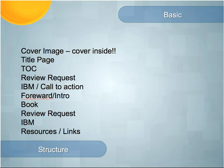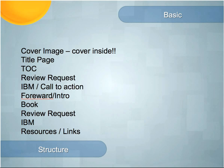For basic formatting, keep in mind that the cover image is included by Amazon convention, so don't make the first page of your book your cover — otherwise readers will see the cover twice. The structure should be: title page, clickable table of contents, a review request, a call to action, an optional foreword and intro, the body of your book, another review request at the end, an IBM section we'll cover in marketing, and resources and links.